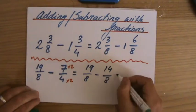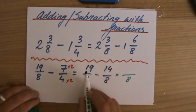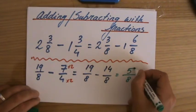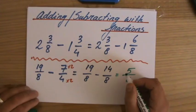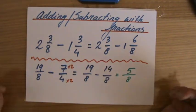And 19/8 minus 14/8, how many eighths do I have left? 19 minus 14, those are 5/8. And can I simplify 5/8? No, I can't, there's no common factor.